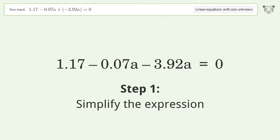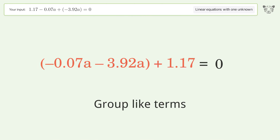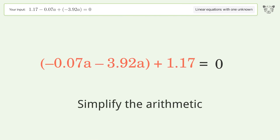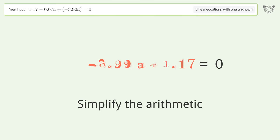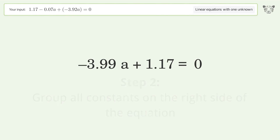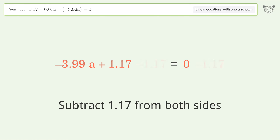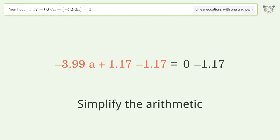Simplify the expression and group like terms. Simplify the arithmetic. Group all constants on the right side of the equation — subtract 1.17 from both sides. Simplify the arithmetic.